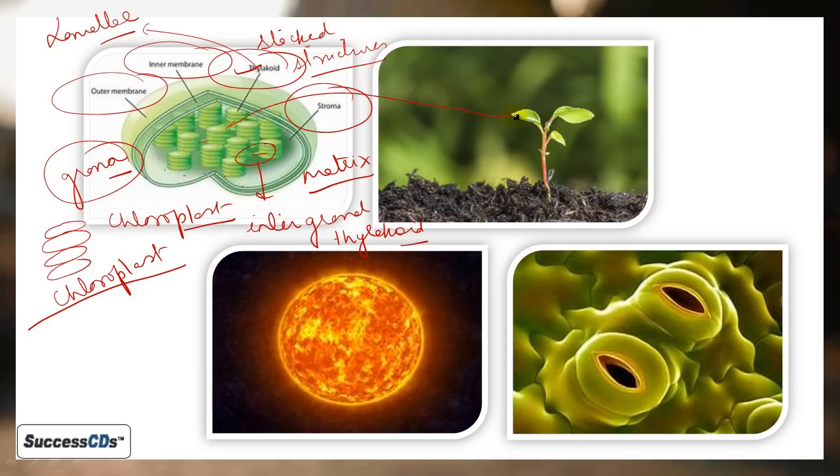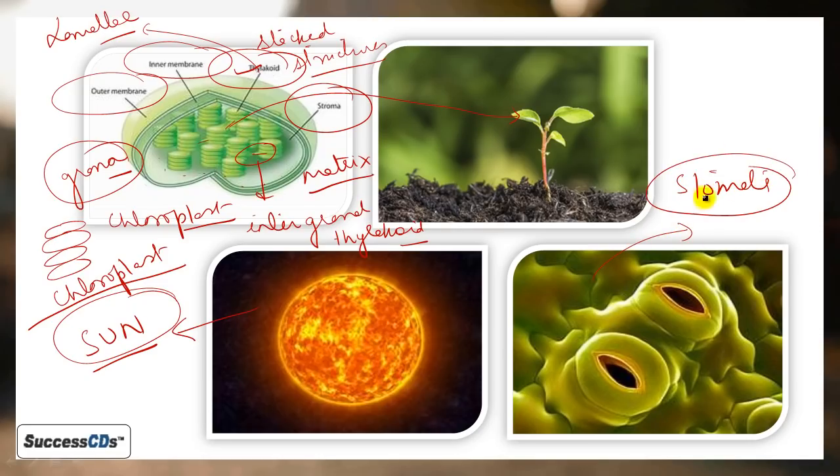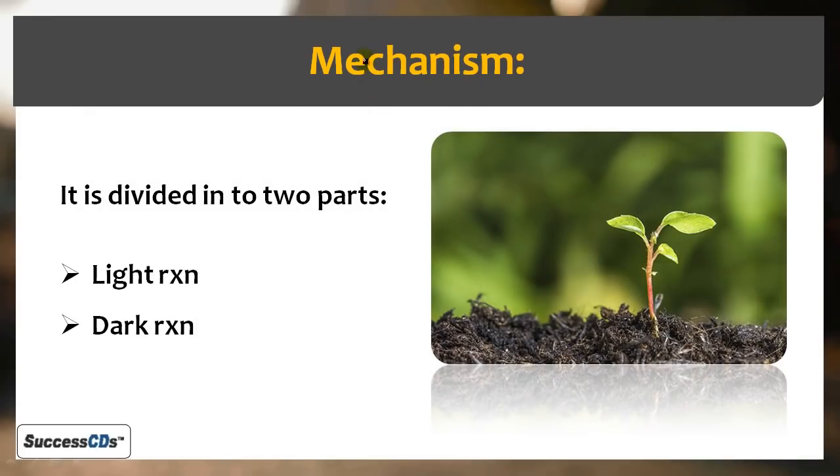Now we understand chloroplast organelle structure. Where is it present? It is present in leaves. These are pore-like structures present in leaves called stomata, through which gaseous exchange occurs - carbon dioxide is inhaled and oxygen is exhaled by the plant.